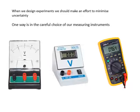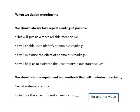When we design experiments, you should always take repeat readings. You should always repeat at least once if possible. Why? Because your mean value will be more reliable. It will enable us to identify anomalous readings. Imagine you only took one reading and that turned out to be an anomalous reading. Imagine you only took two readings and one of those would have been anomalous. By taking repeated readings, you are minimizing the effect of anomalous readings.